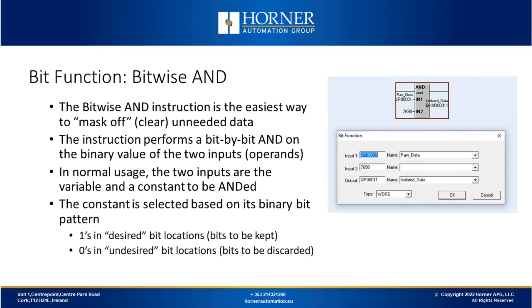Let's start with the bitwise AND function. In Seascape there are a number of bitwise operations which deal with data at a bit level. The bitwise AND function is great for clearing the data you're not interested in, which is also called masking off. The instruction performs a bit-by-bit AND function on the binary value of two inputs. The first input is typically the variable you're operating on, and the second input is typically a constant that's going to be ANDed with your variable, effectively masking off different bits within that word or double word.